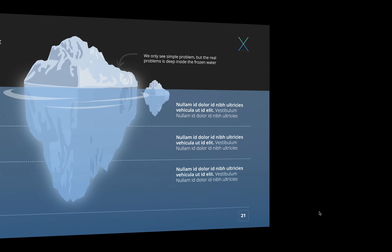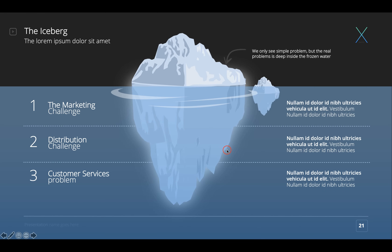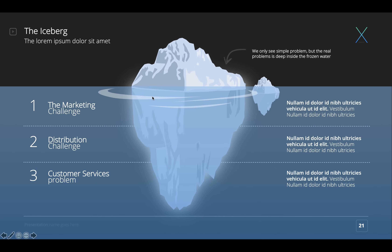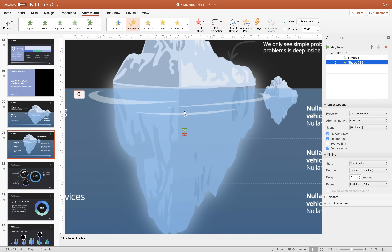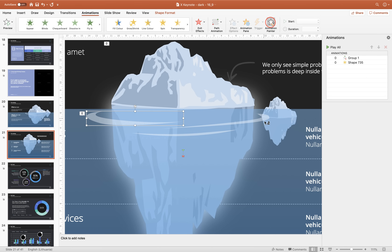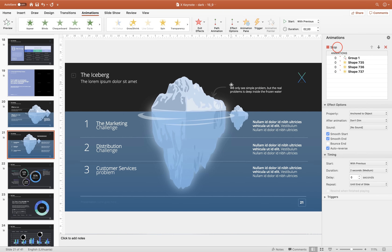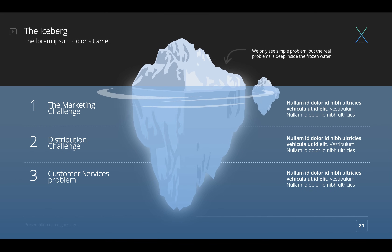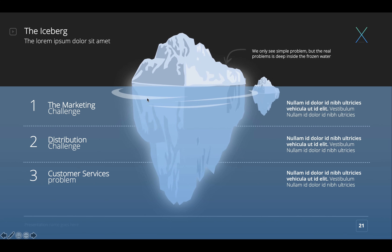Make sure it has Smooth Start, Smooth End, Auto Reverses, and repeats Until End of Slide. Let's give it a full screen preview: click once and when the iceberg goes down the ripple expands, then contracts when the iceberg goes up — that's physics, ladies and gentlemen! Use the Animation Painter, select the ripple on the left, and paste the animation to the one on the right and the one in the center. All three ripple shapes are expanding and the iceberg is floating up and down.